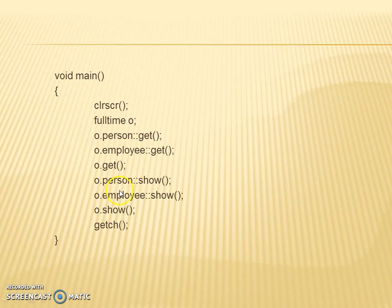This whole information basically provides all the information about two base classes including one derived class of the employee. This is how we can do multiple inheritance which comprises of two base classes and the derived class.